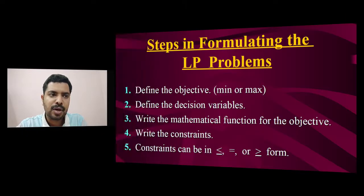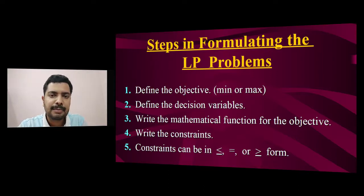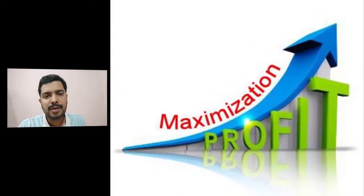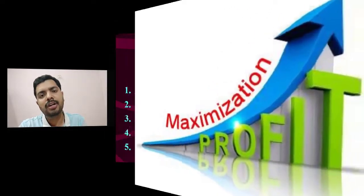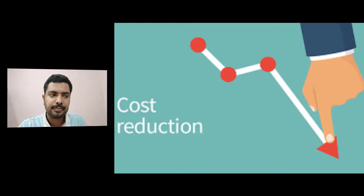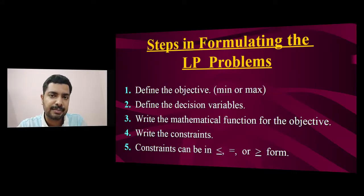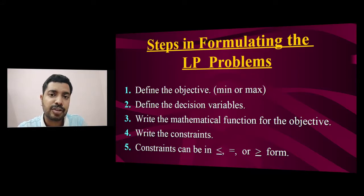The first step is to define the objective — whether it is to maximize or to minimize. Basically, problems involve maximizing profit or minimizing cost. The next step is to define the decision variables: you have to identify them and define them very clearly.